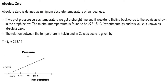Absolute zero is defined as the minimum absolute temperature of an ideal gas. If we plot pressure versus temperature (P vs T), we get a straight line. Extending this line backwards to the x-axis, the minimum temperature is found experimentally to be −273.15°C — this is absolute zero. The relation between Kelvin and Celsius is T = Tc + 273.15.